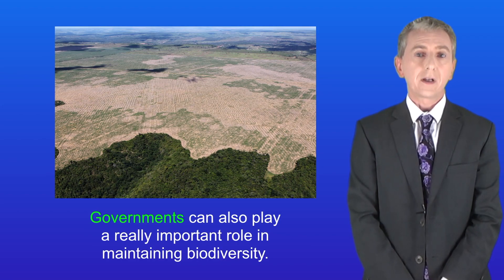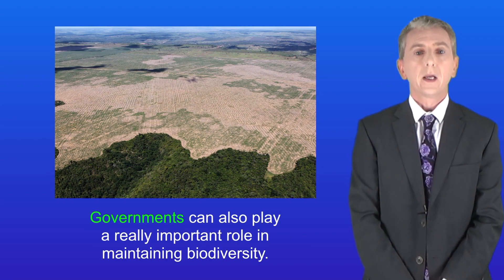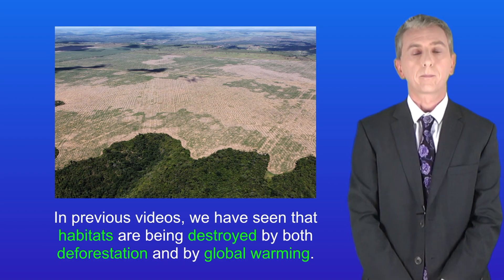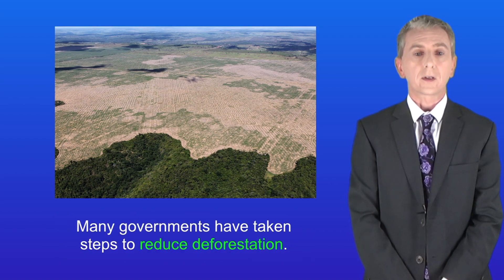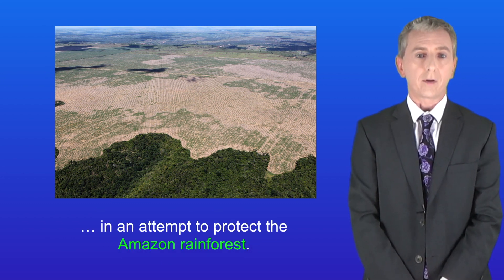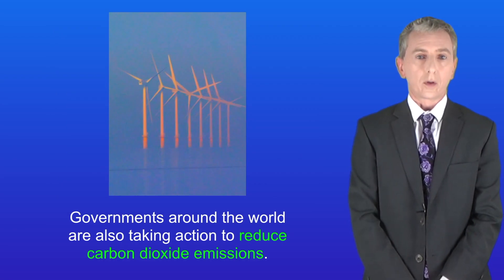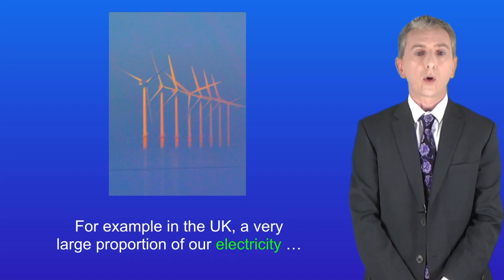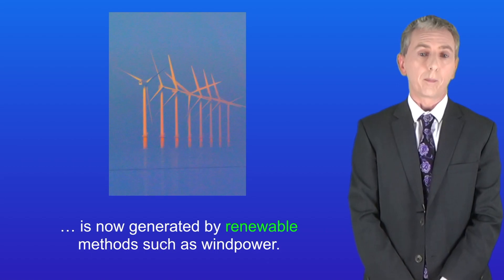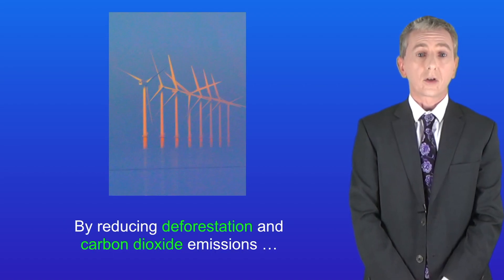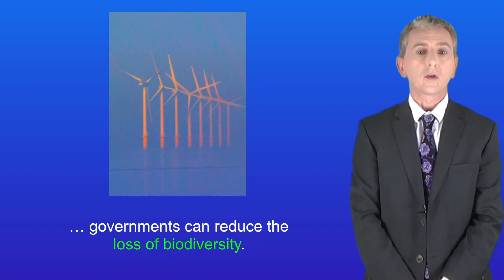Governments can also play a really important role in maintaining biodiversity. In previous videos we've seen that habitats are being destroyed by both deforestation and by global warming. Many governments have taken steps to reduce deforestation — for example, the Brazilian government has established national parks in an attempt to protect the Amazon rainforest. Governments around the world are also taking action to reduce carbon dioxide emissions. For example, in the UK a very large proportion of our electricity is now generated by renewable methods such as wind power. Increasing the use of renewables will reduce global warming, so by reducing deforestation and carbon dioxide emissions, governments can reduce the loss of biodiversity.